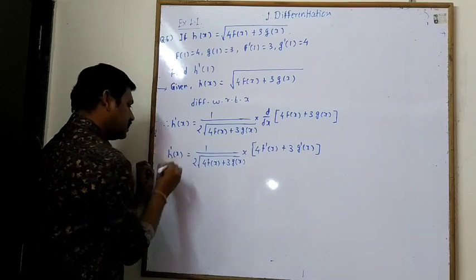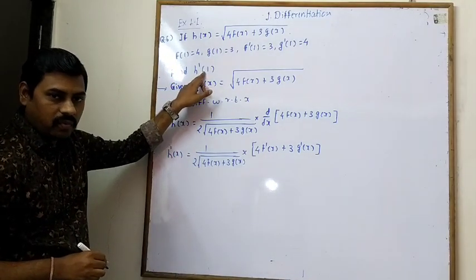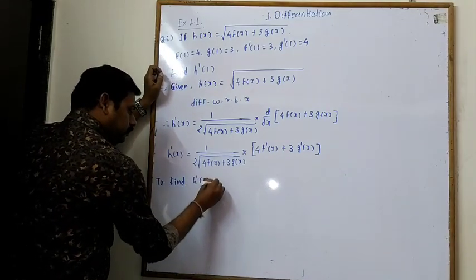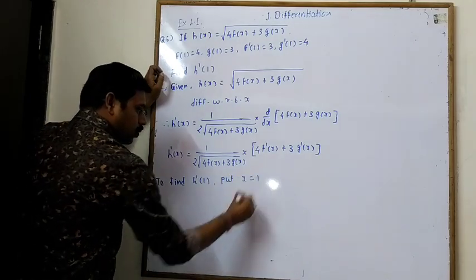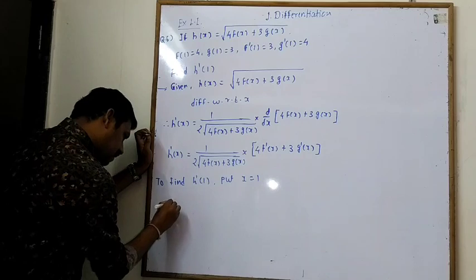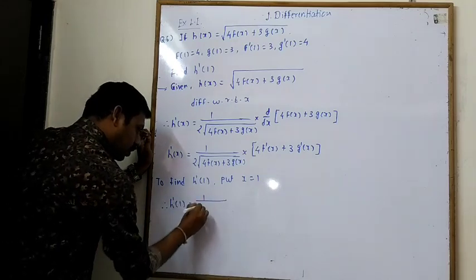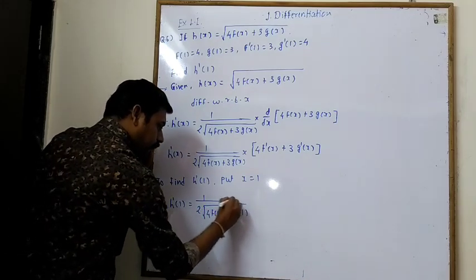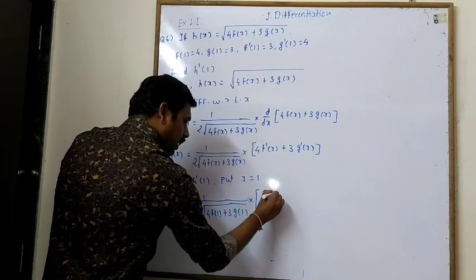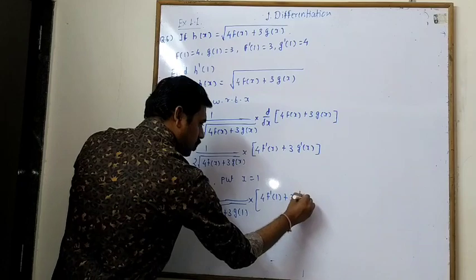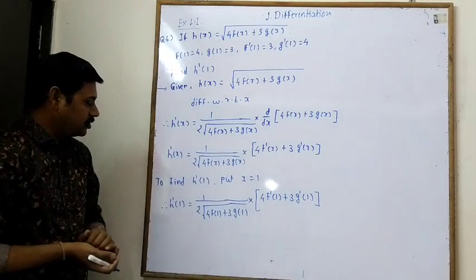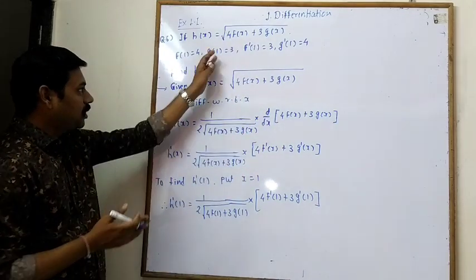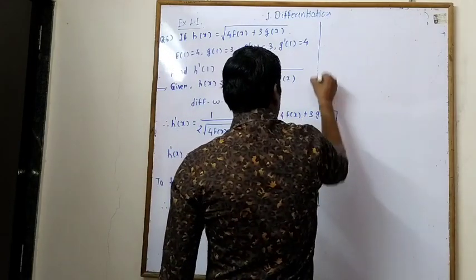To find h'(1), put x = 1. h'(1) = 1/(2√(4f(1) + 3g(1))) · (4f'(1) + 3g'(1)). All values of f(1), g(1), f'(1), and g'(1) are read from the given table.